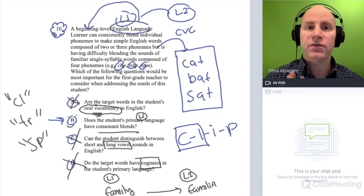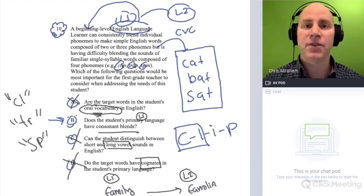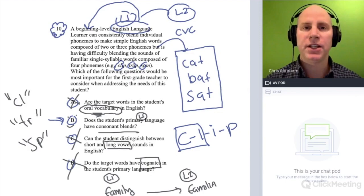So for this student right here, it's very appropriate to clarify explicitly English consonant blends. This would be the next step for that entering level student in their oral language development. It's a great problem. Let's continue.